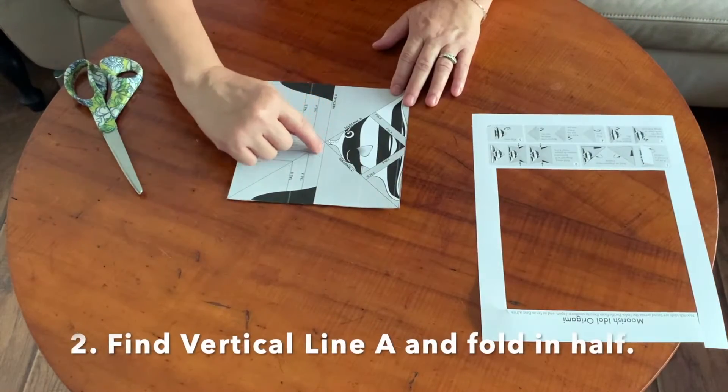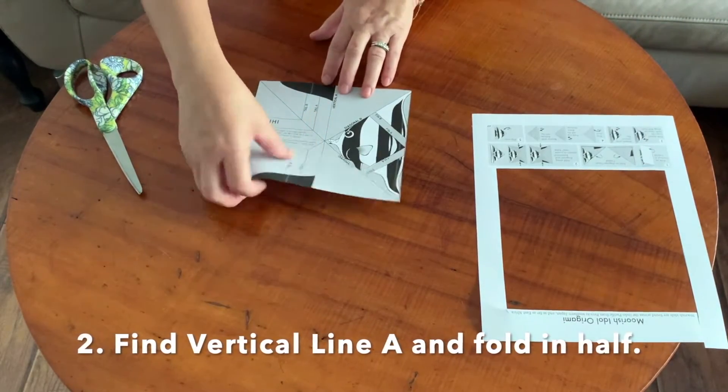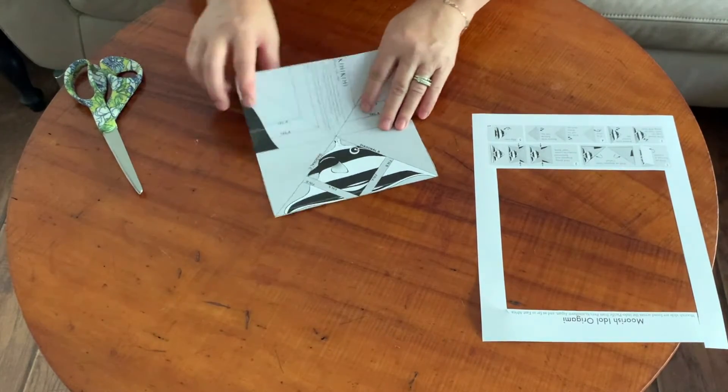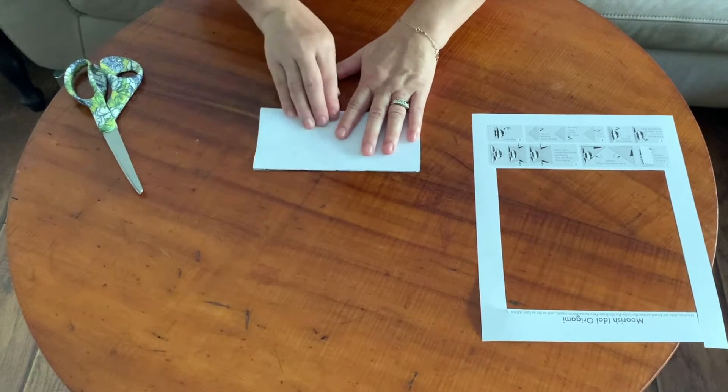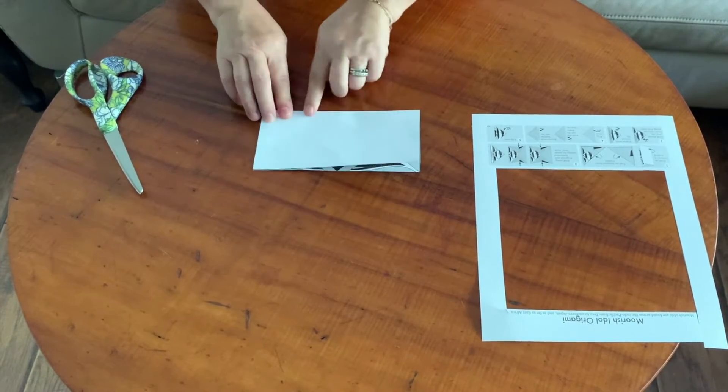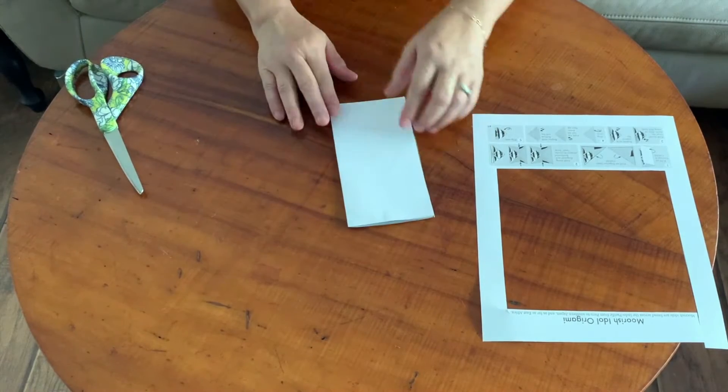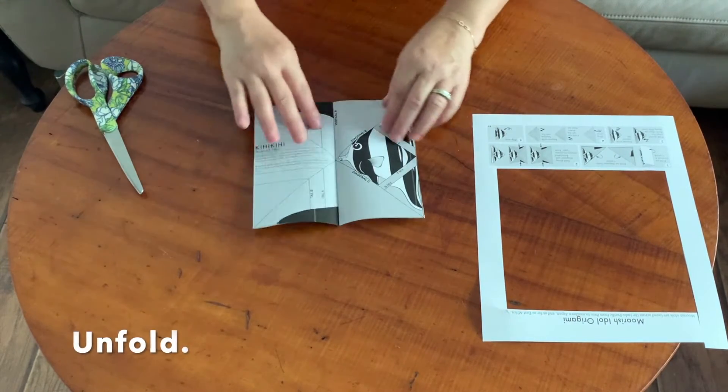Find vertical line A right down the center and with the printed side facing up, fold it in half and try your best to match the corners and run your finger along the fold to create a nice crease. Now unfold.